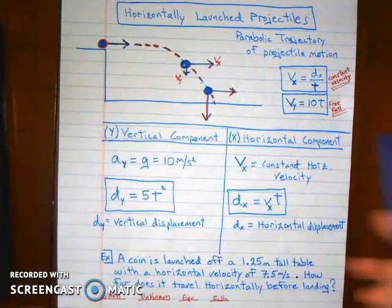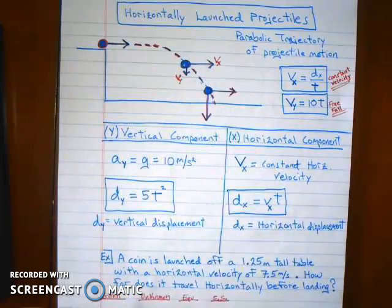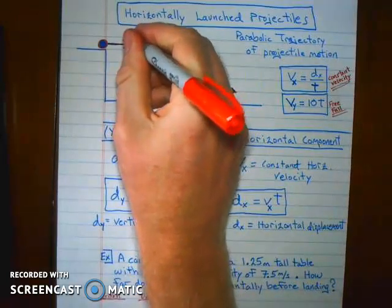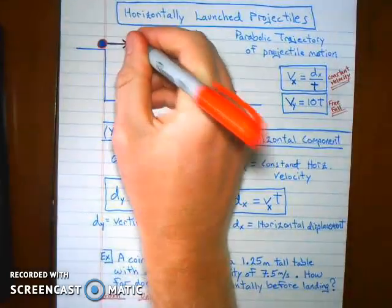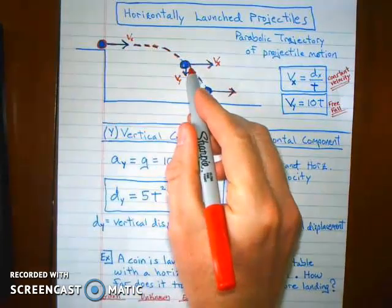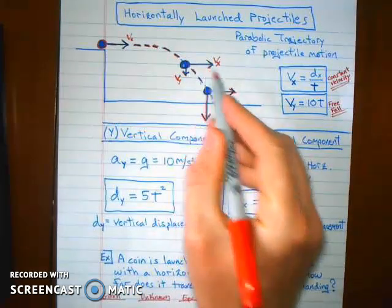And so when we look at the velocity vectors initially, the projectile, once it's launched, only has velocity in the x direction. And then a moment in time later, it's traveling the same, has the same horizontal velocity. That's constant.